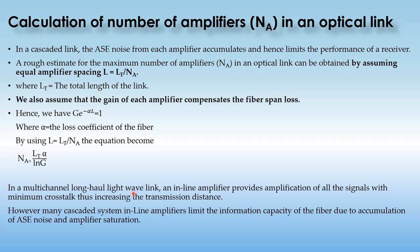In a multi-channel WDM system, an inline amplifier provides amplification of all signals with minimum crosstalk, increasing the transmission distance — this is a benefit of the optical amplifier. However, in many cascaded systems, inline amplifiers limit the information capacity of the fibers due to accumulation of ASE noise and amplifier saturation. This ASE noise power accumulation from every optical amplifier limits both the performance and the distance of the optical link.